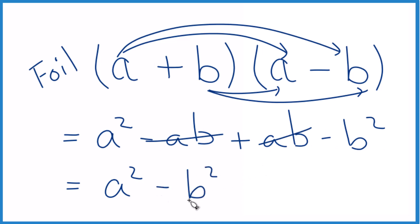This is kind of an important pattern in math. This is called the difference of squares. So when we expand and simplify a plus b times the quantity a minus b, we end up with a squared minus b squared.